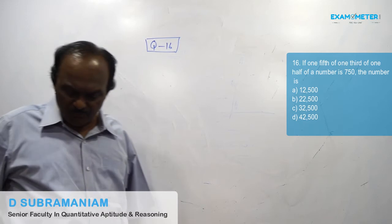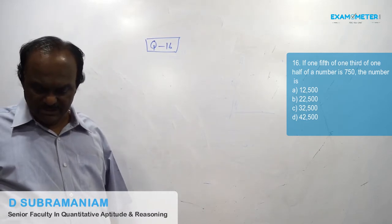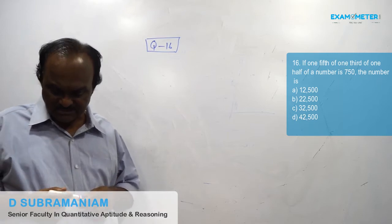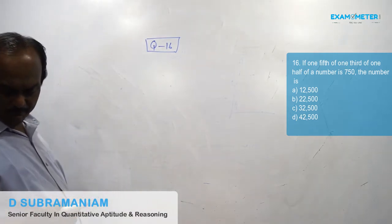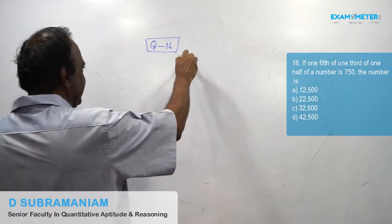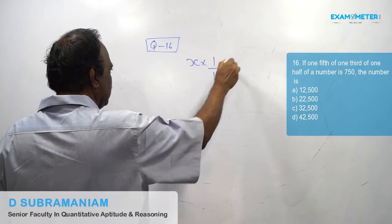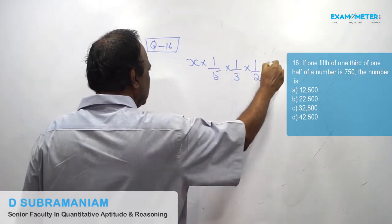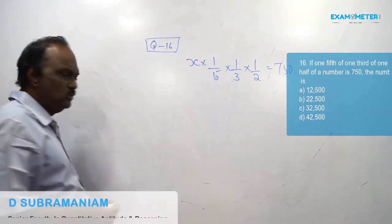If one-fifth of one-third of one-half of a number is 750, the number is: x × (1/5) × (1/3) × (1/2) = 750.